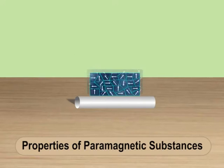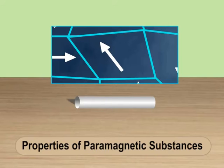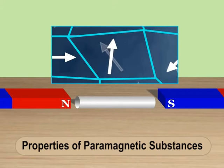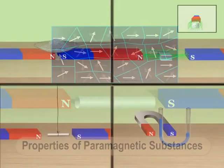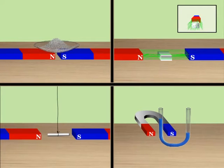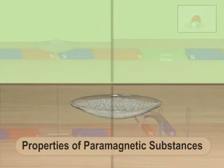A paramagnetic substance is feebly attracted by a strong magnet. When placed in a non-uniform magnetic field, these substances move from weaker parts of the field to the stronger parts.